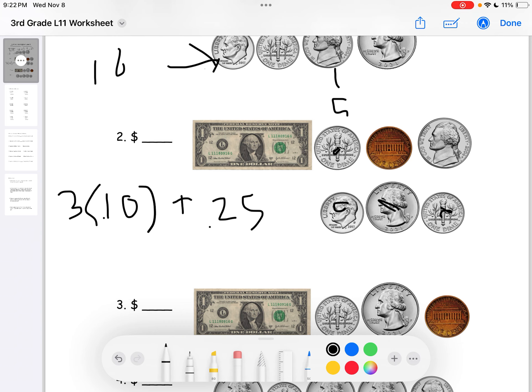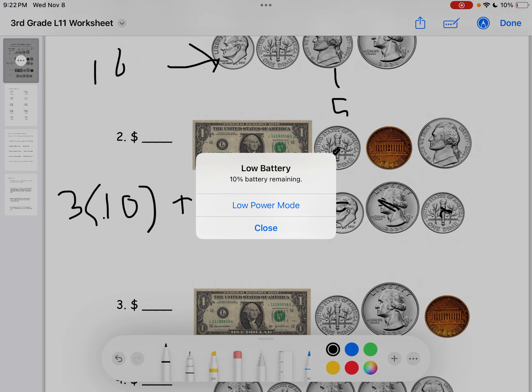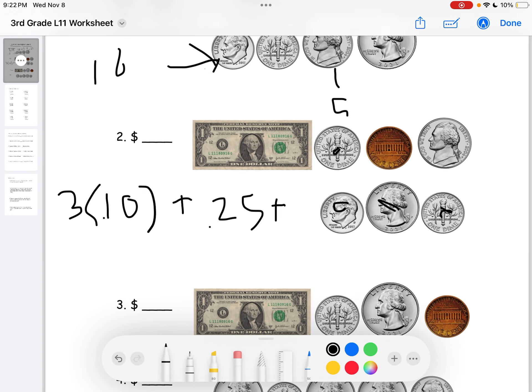And we have 1 penny. So, it will also be plus $0.01. And then since we have a nickel right here, plus $0.05. And we also have the dollar right here, plus 1 dollar. So, 3 times $0.10. If we multiply that, it will equal $0.30. Plus $0.25 will be $0.55. Plus the one nickel we have, $0.60.